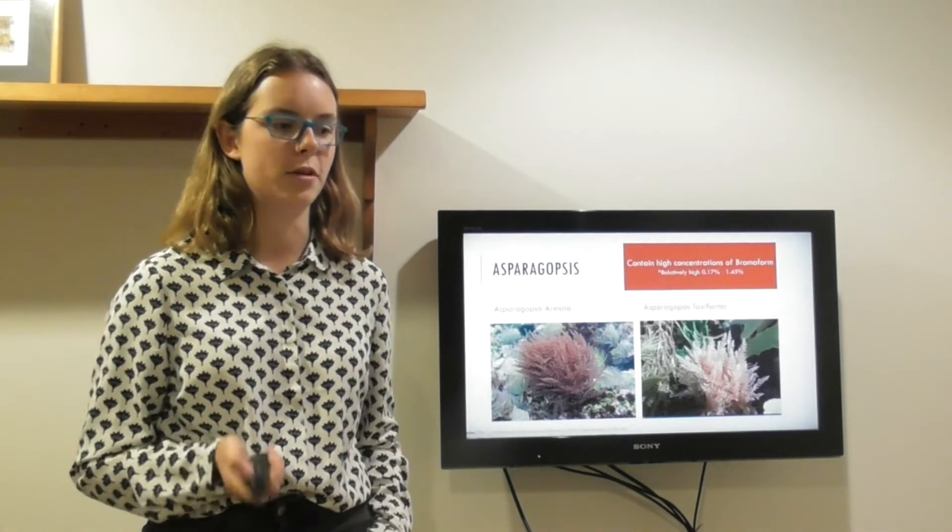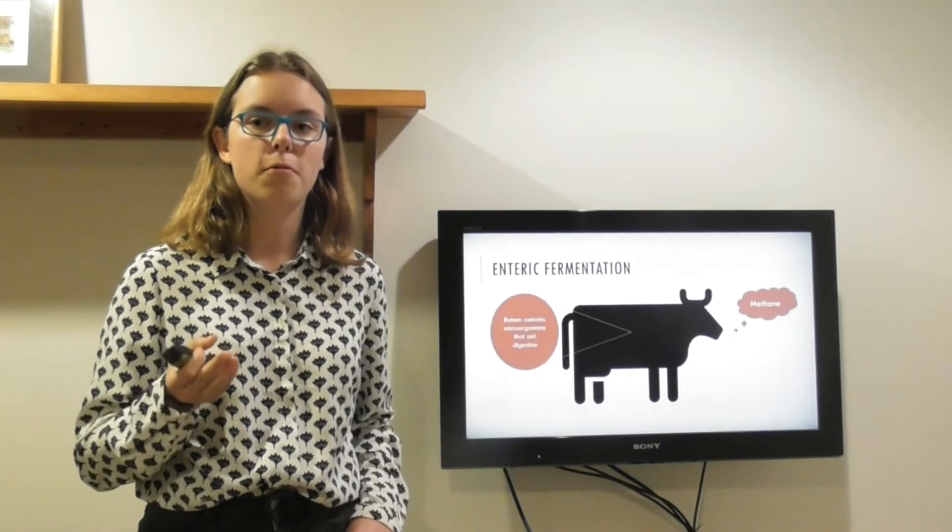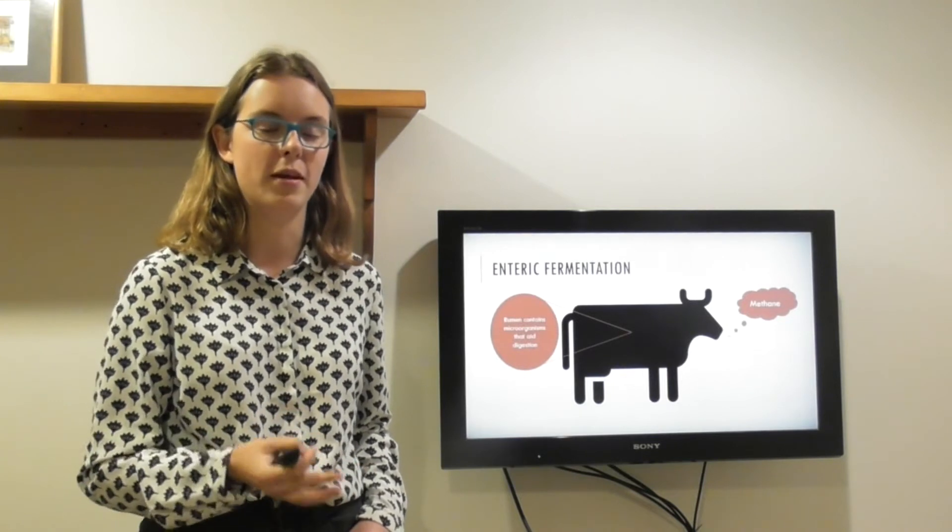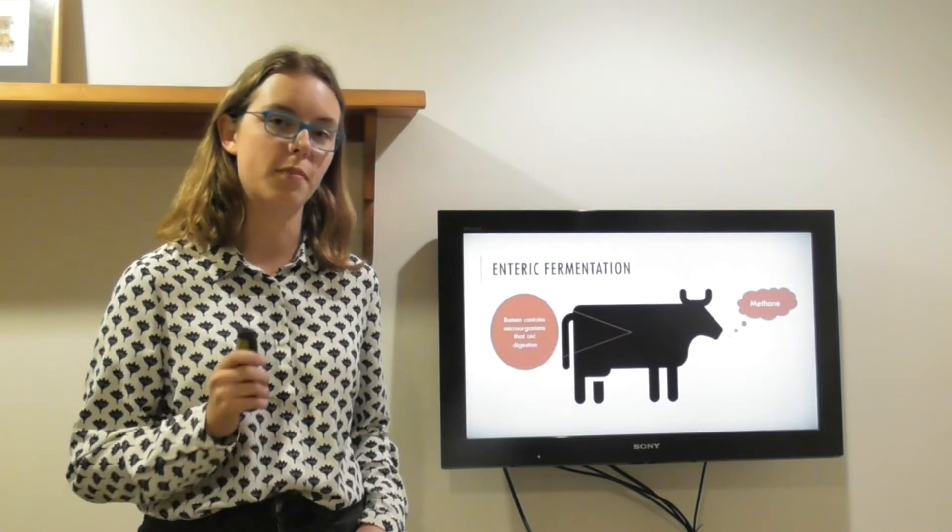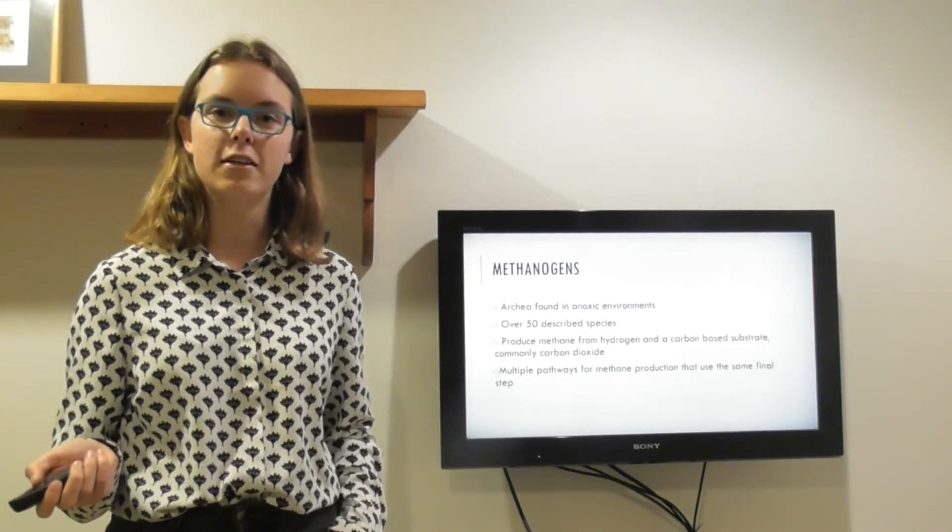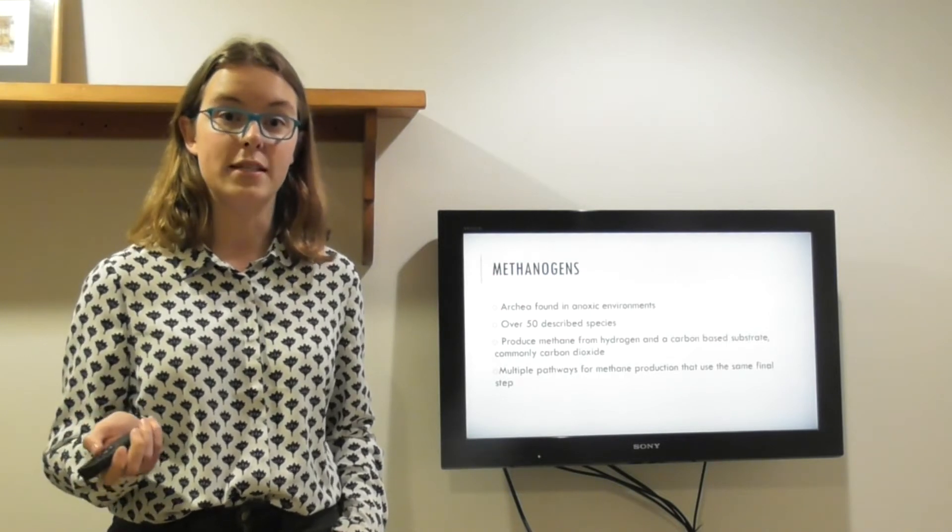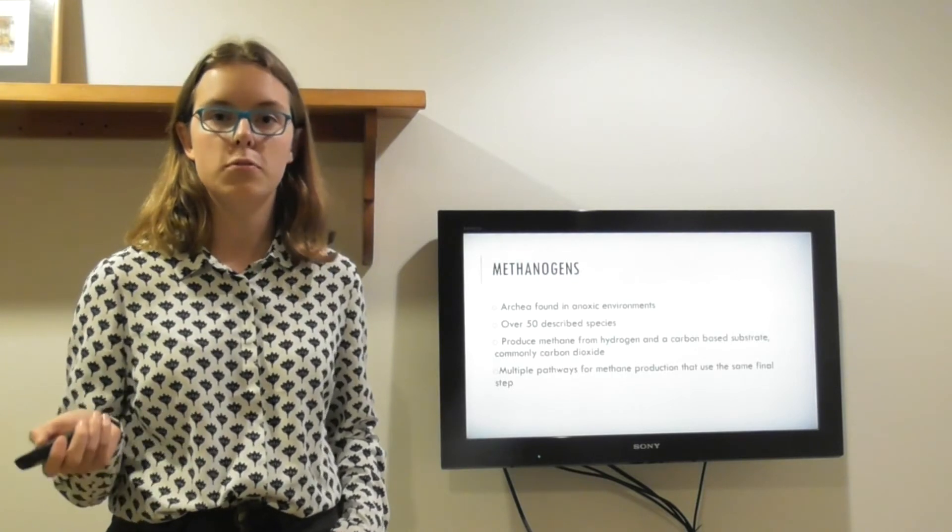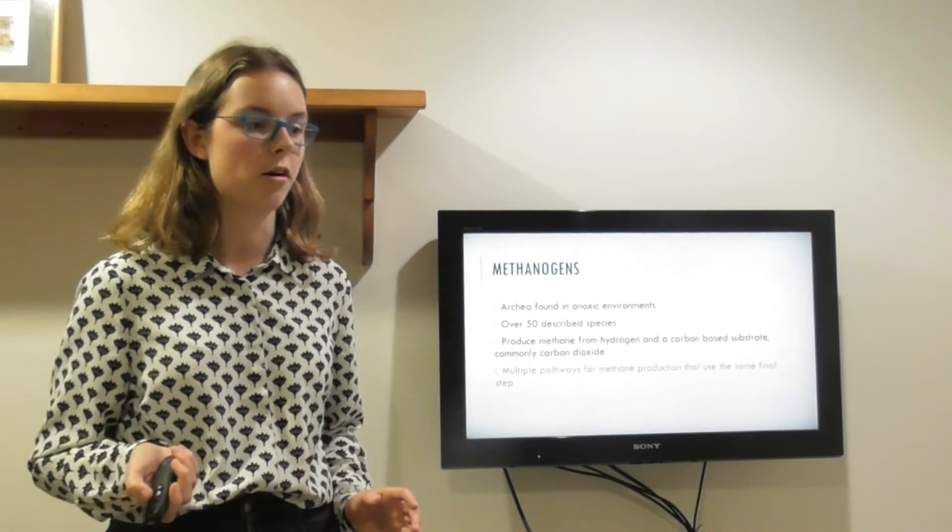Let's take a closer look at how methane is produced. Enteric fermentation describes the process of how food is broken down in the cow's rumen. There are a whole host of microorganisms that inhabit the rumen and help break down food, and some of them produce waste products too. Methane is a waste product produced by just one group, the methanogens. These are all from the domain archaea, which means they're single-celled prokaryotic organisms, a bit like bacteria. There are over 50 described species, and they produce methane from hydrogen and carbon dioxide. Although the pathway differs between species, the final step is the same across all species, and it's this that is targeted by the Asparagopsis additive.